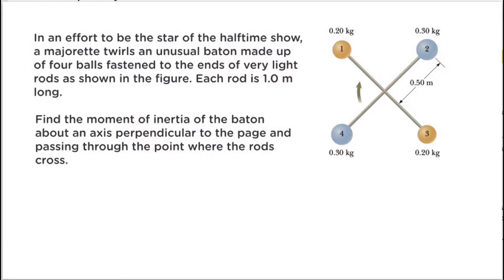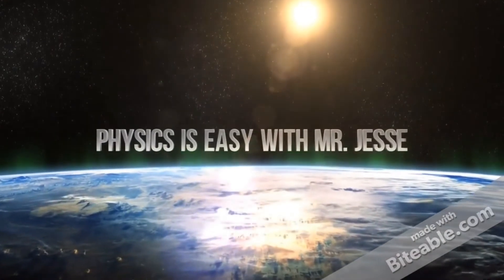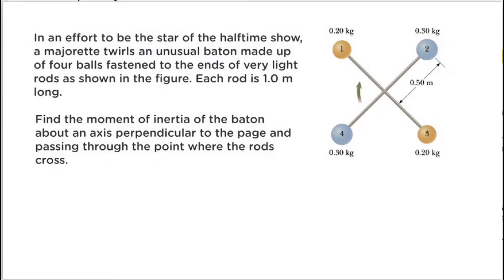Here is a sample problem on Moment of Inertia. In an effort to be a star of the halftime show, a major twirls an unusual baton made up of four balls fastened to the ends of very light rods, as shown in the figure. Each rod is 1.0 meter long. Find the Moment of Inertia of the baton about an axis perpendicular to the page and passing through the point where the rods cross.